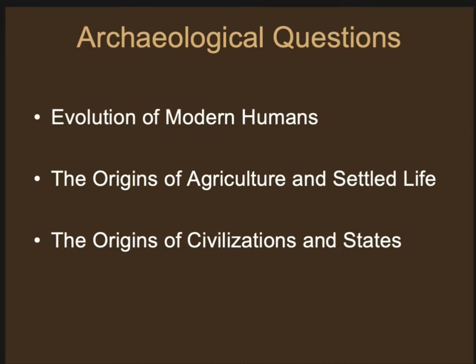Essentially: how did humans evolve physically? How and why did we develop agriculture and move from hunting and gathering to agriculture? And how did we go from living in small-scale groups of 25 to 30 people to living in groups of hundreds of thousands or millions? These are the three big questions. Smaller research questions are affiliated with these larger ones — for example, researching how the Maya went from small groups to large cities relates to the origins of civilization and states.